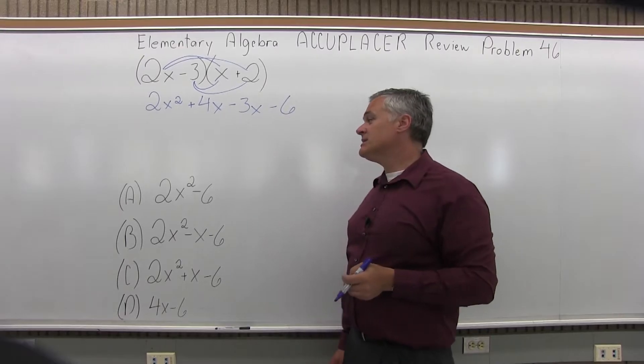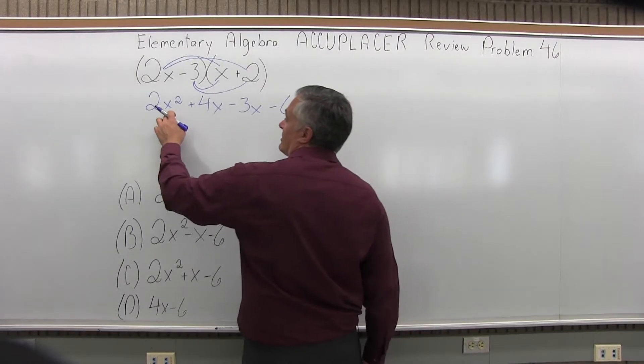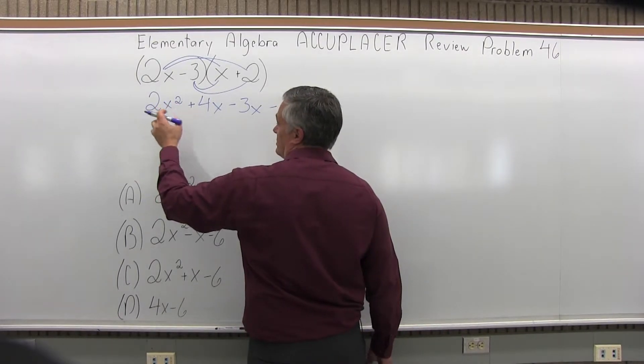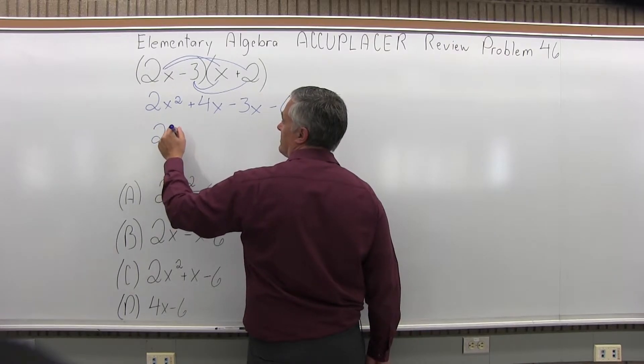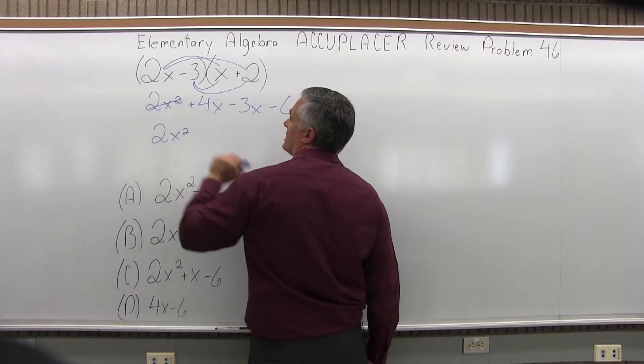And now let me combine the pieces that can combine. The first piece is 2x squared. There's no other x squared, so I can just bring my 2x squared into my answer. Done with the x squared.